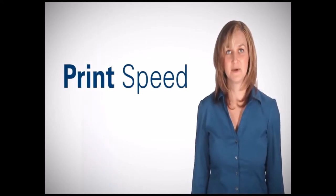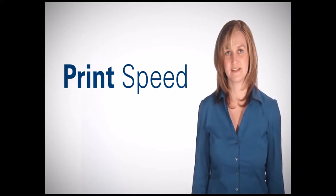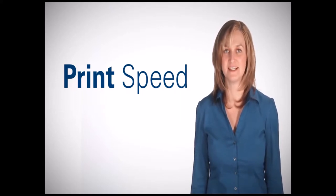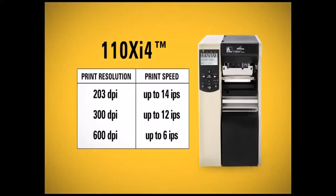As DPI increases, the maximum print speed of a printer decreases. For example, the print speed of a 110XI4 printer varies based on DPI. A 203 dpi 110XI4 can print up to 14 inches per second. A 300 dpi 110XI4 can print up to 12 ips.